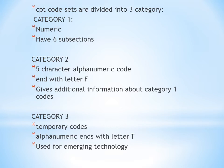CPT code sets are divided into three categories: Category I, Category II, and Category III. Category I codes are numeric five-digit numbers and have six subsections. The CPT book includes most codes as Category I codes. These are the most commonly used codes.